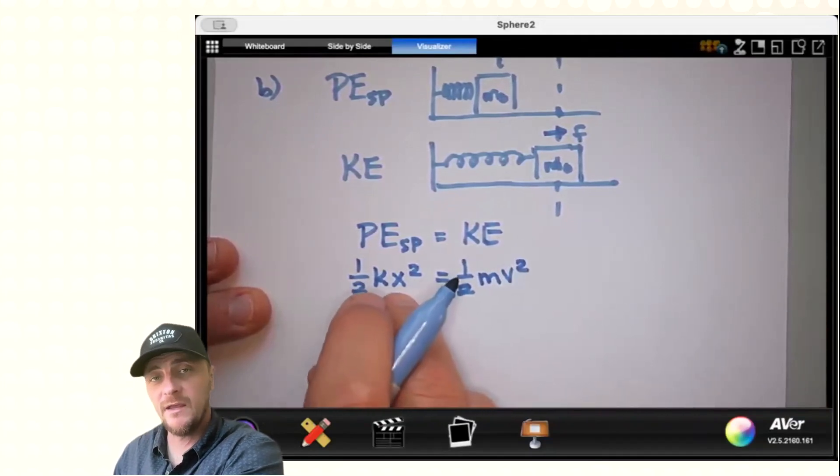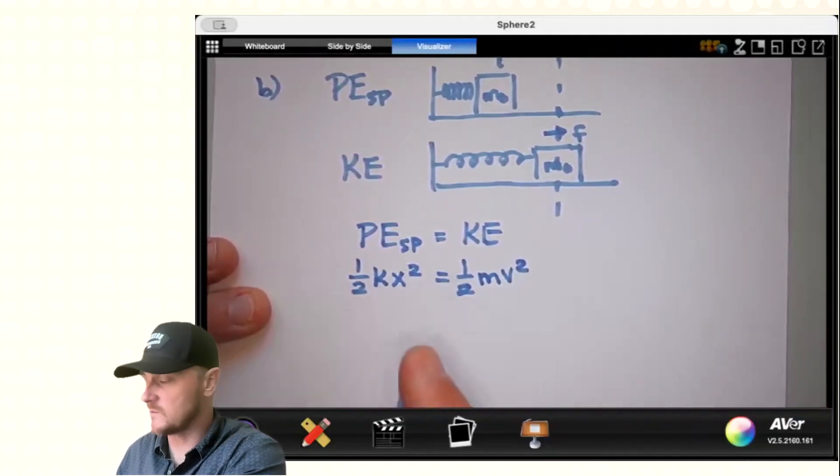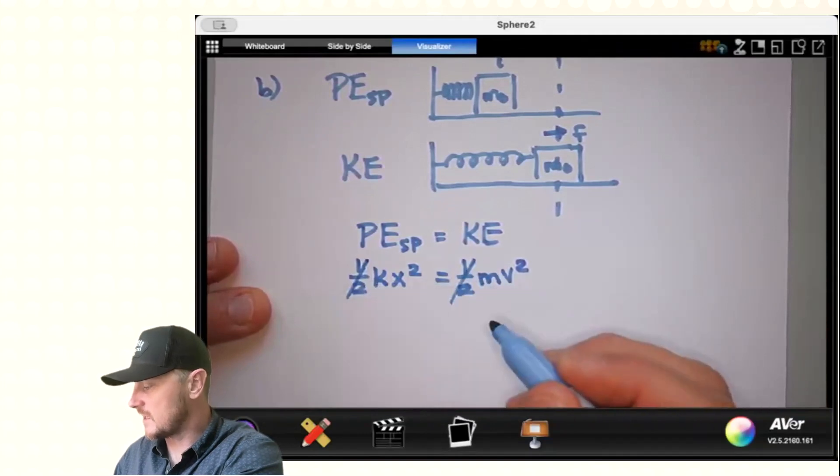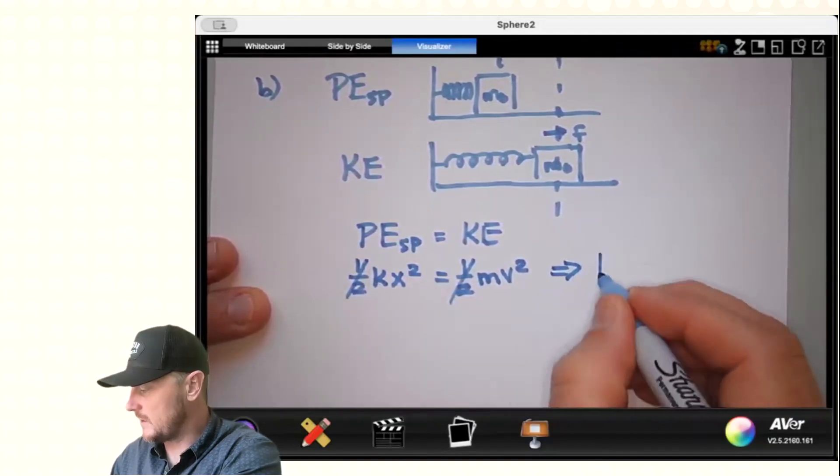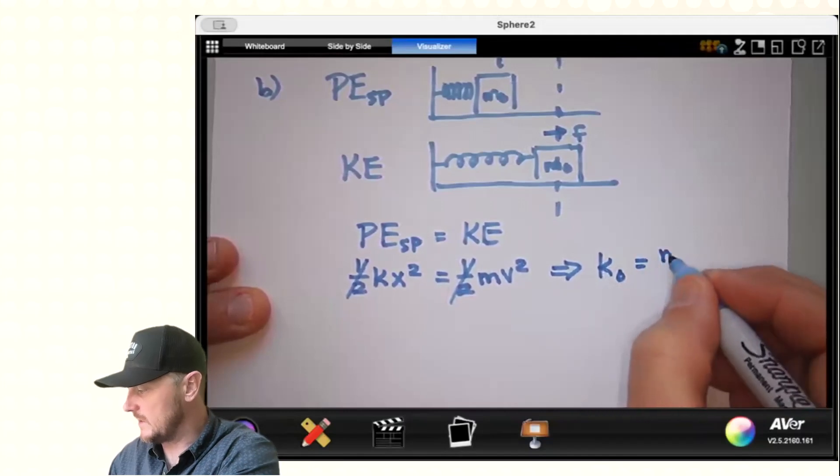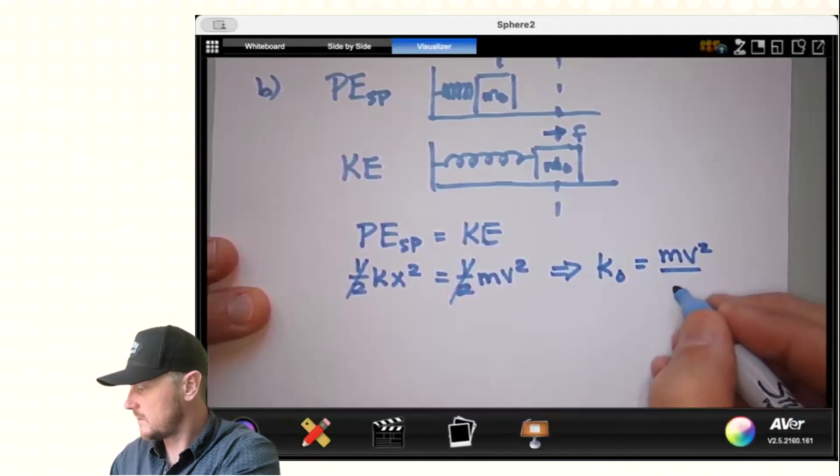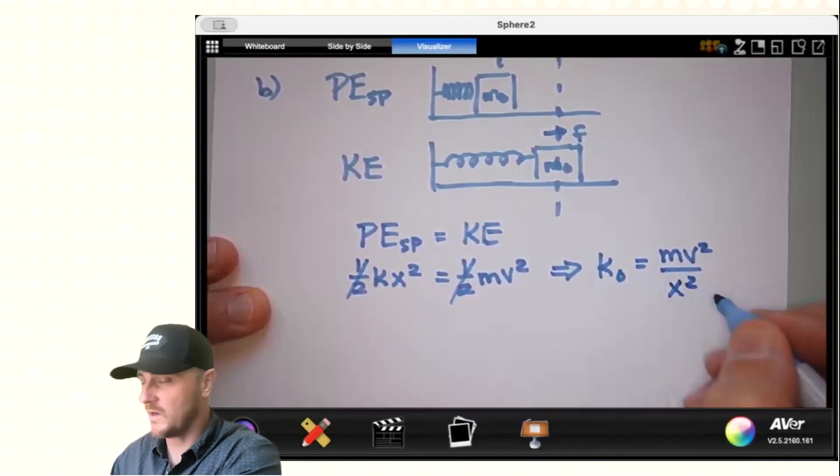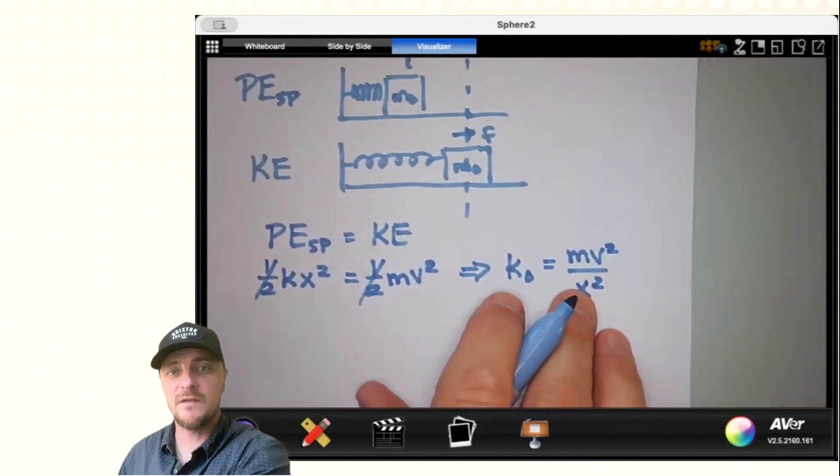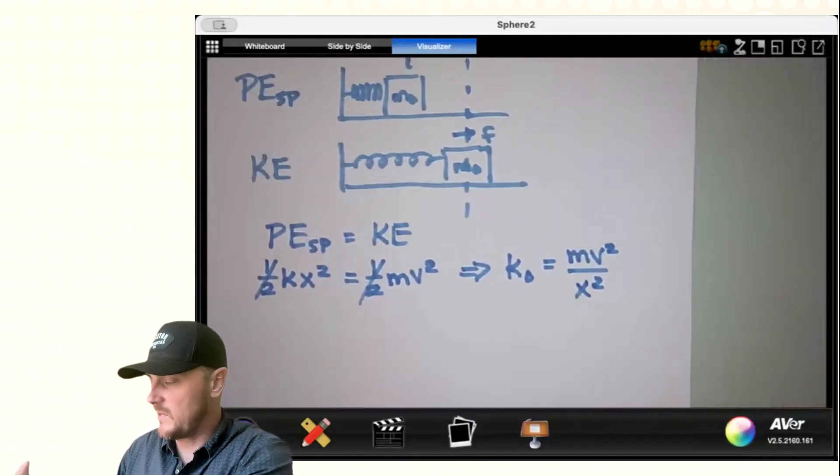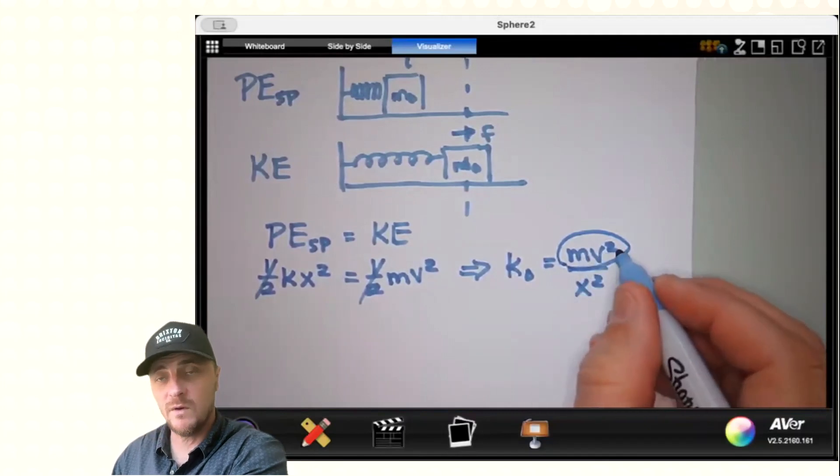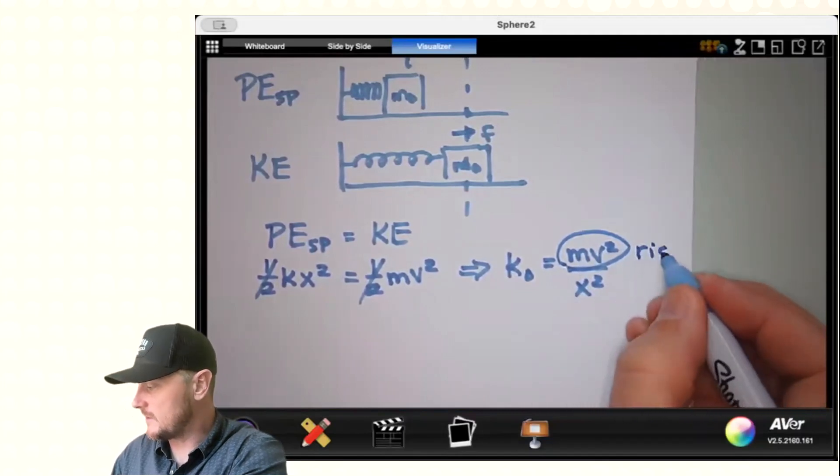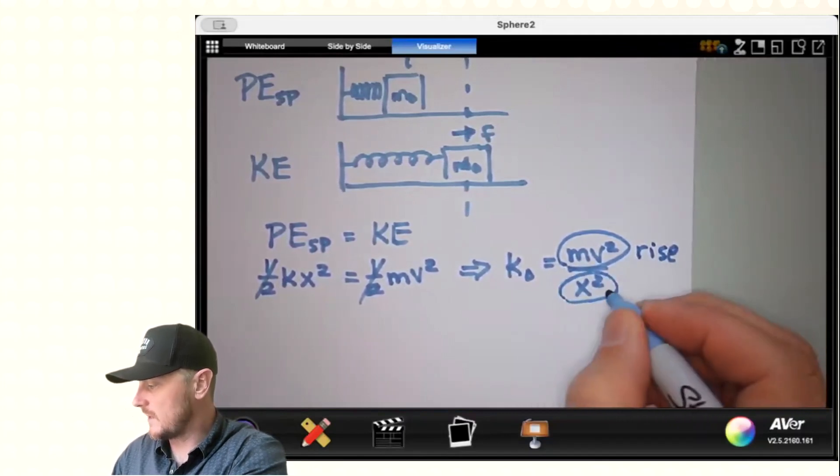Some people put A in there for amplitude, and that's fine as well. The halves cross out, and I would solve for K, and let's call it K0. So K0 would be equal to MV squared, all over X squared. And you can see how this is the answer for Part B. On the vertical axis, we would plot MV squared. That is my rise. And on the horizontal axis, I would plot X squared. That is my run.